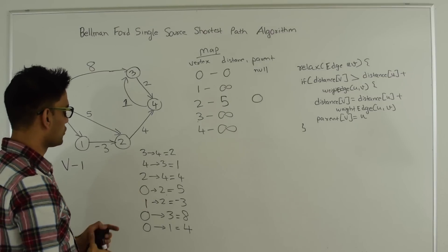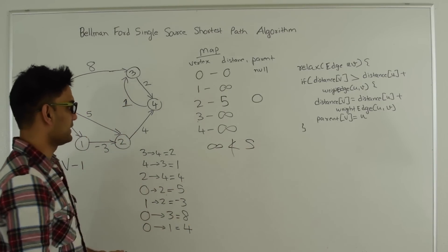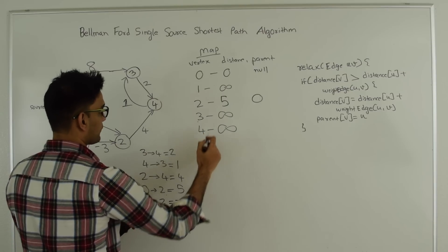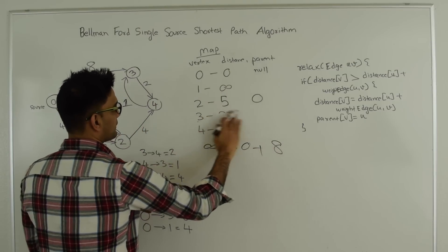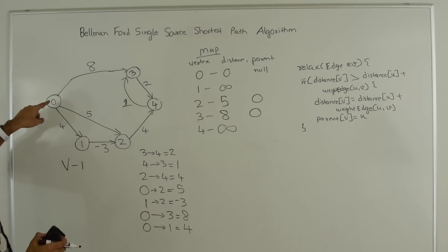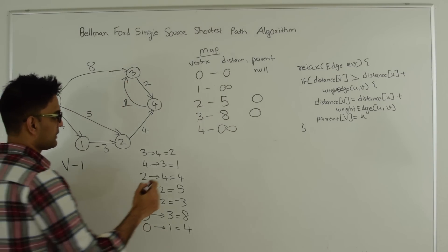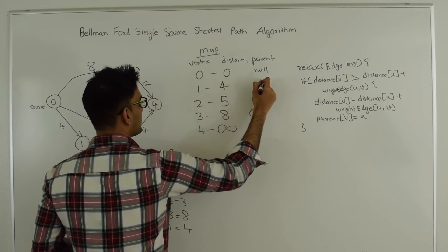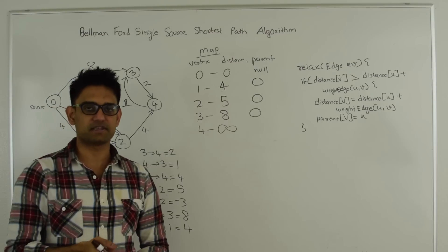Next edge 1,2: distance of vertex 1 is infinity, so this condition is never true — we cannot do anything. Edge 0,3: distance of 3 is infinity, which is greater than distance of 0 plus weight 8, so we update vertex 3's distance to 8 and set its parent to 0. Finally edge 0,1: distance of 1 is infinity, greater than 0 plus the weight, so this becomes 4 and we set its parent to 0. That completes one repetition; we need to repeat 3 more times.